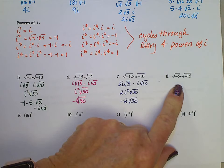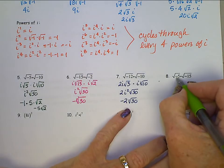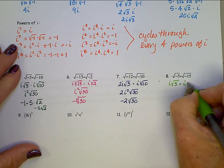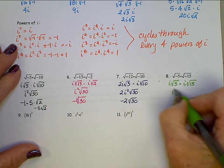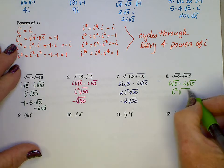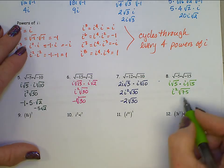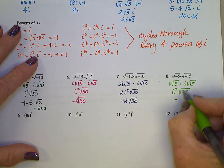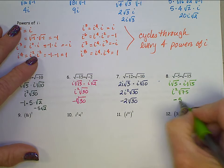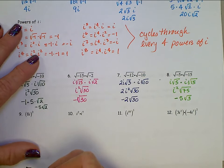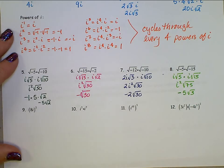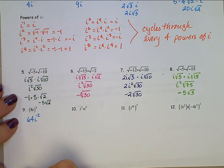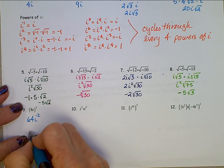For square root of negative 5 times square root of negative 15: that's i square root 5 times i square root 15, which gives i squared times the square root of 75. That 75 breaks down — it's 25 times 3. So i squared is negative, square root of 25 is 5, giving us negative 5 square root 3. For (8i) squared, we have to square both pieces: that gives us 64 i squared. i squared is negative 1, so we end up with negative 64.